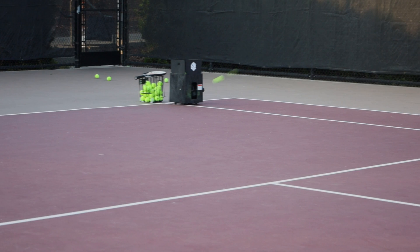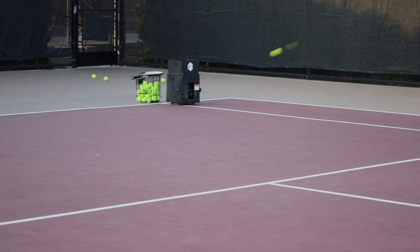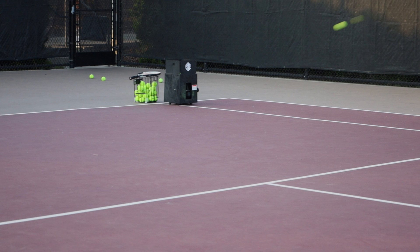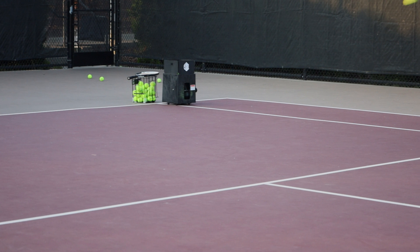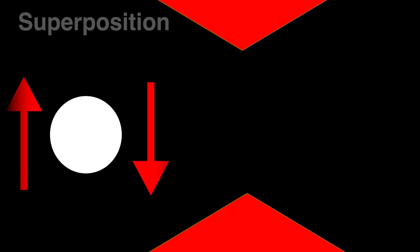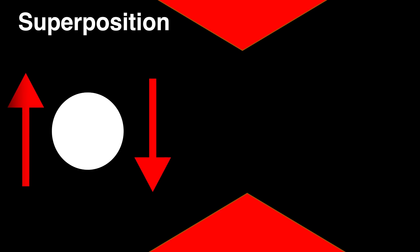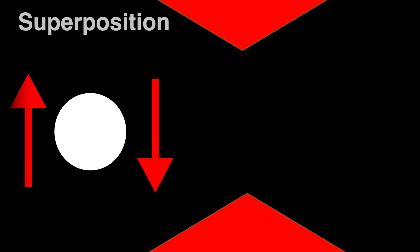It is not until the machine shoots the ball that an observer can observe the spin of the ball. In the quantum world, an electron has both spin up and spin down when no one is observing it. When the electron is measured, it acquires one or the other.